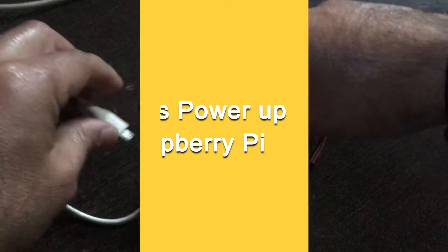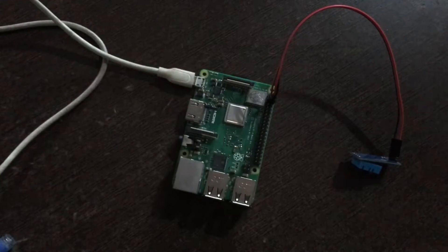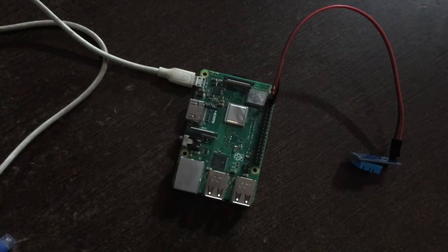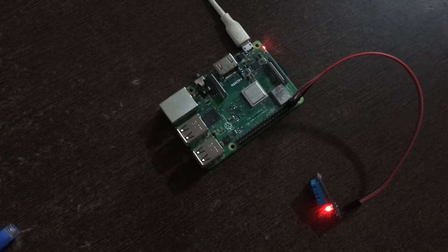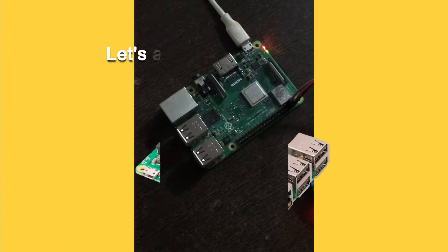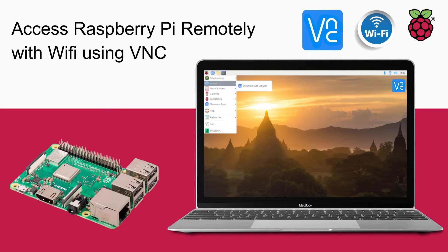Let's connect the power supply to the Raspberry Pi. As you can see, Raspberry Pi has been powered up. Now let's access Raspberry Pi using VNC Viewer in my laptop. If you don't know how to access the Raspberry Pi through a Wi-Fi network using VNC Viewer, then you can watch my last video. The link is also available in the video description.